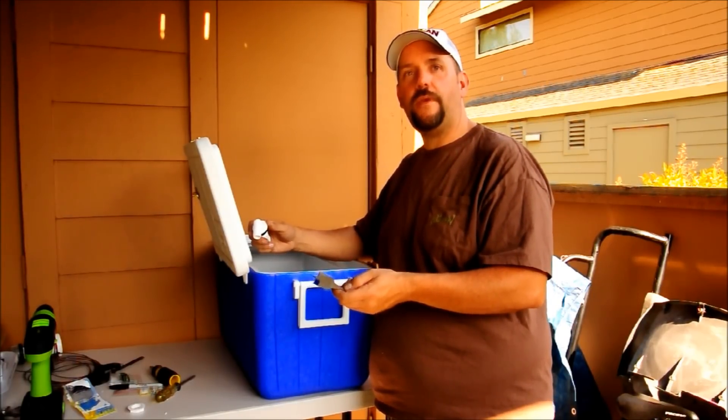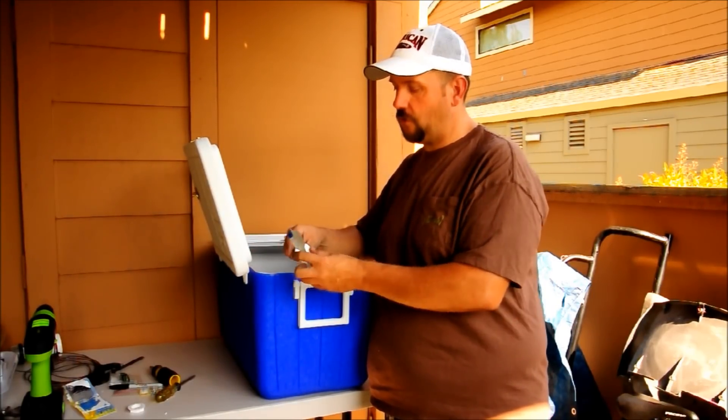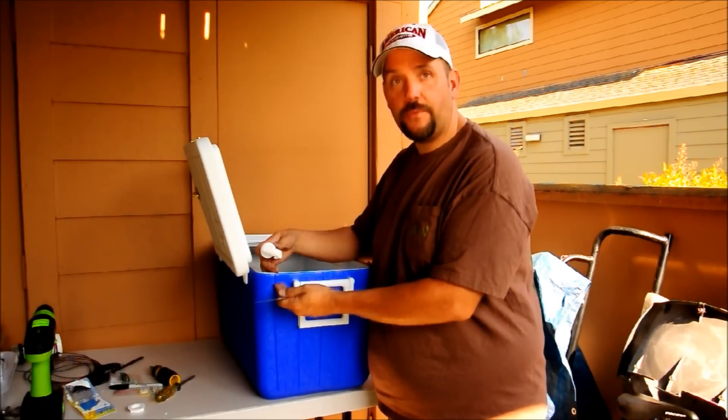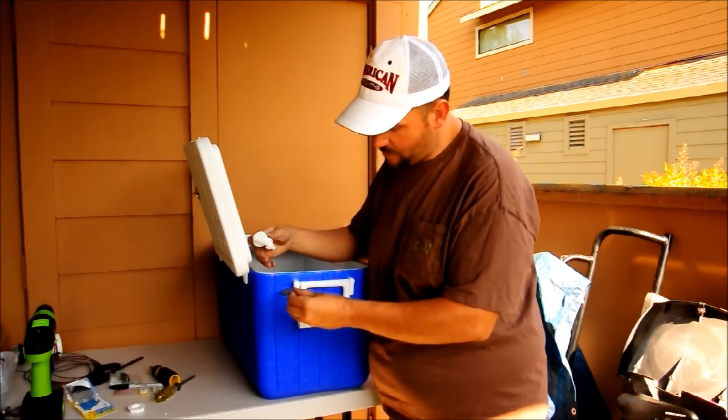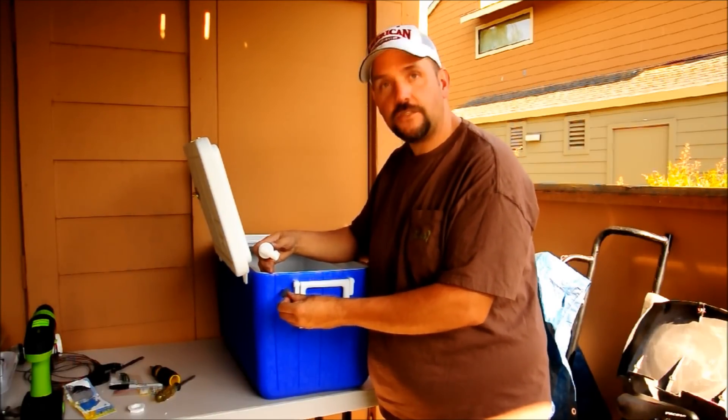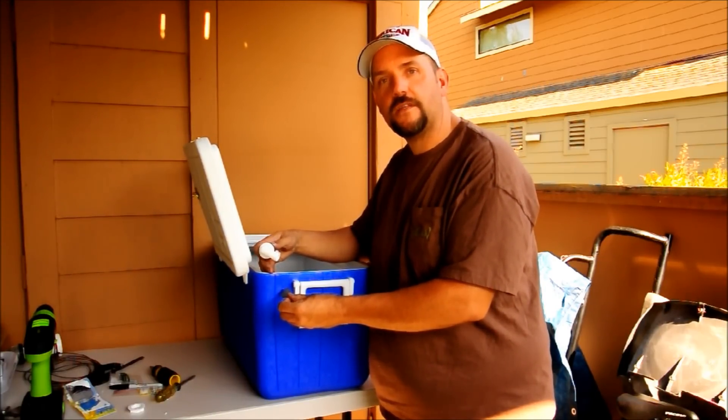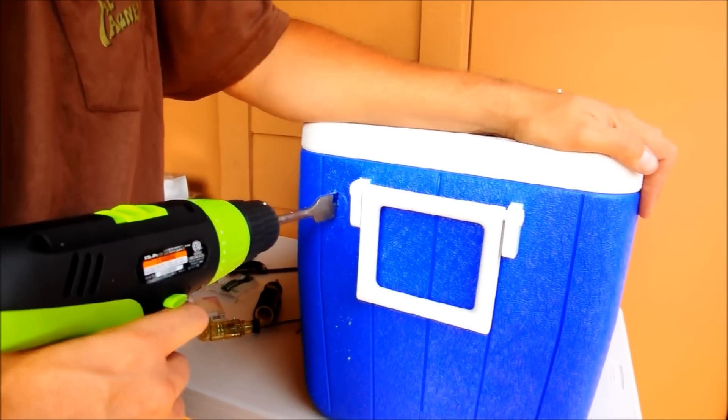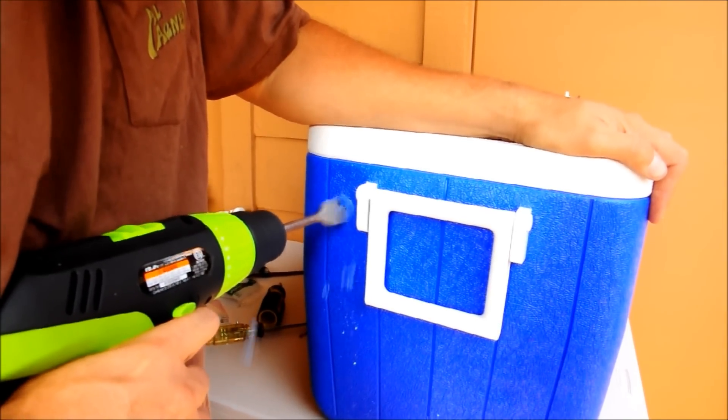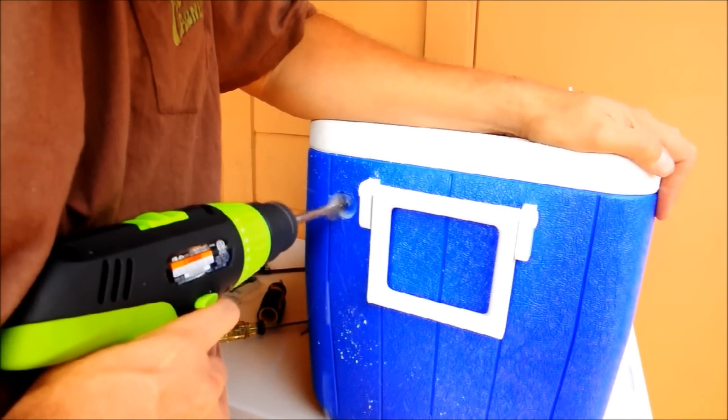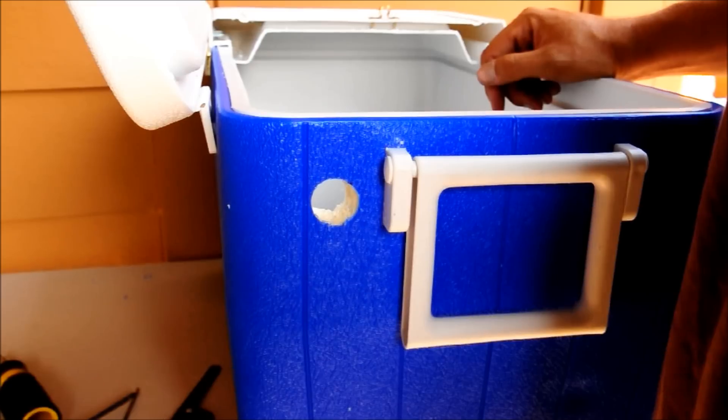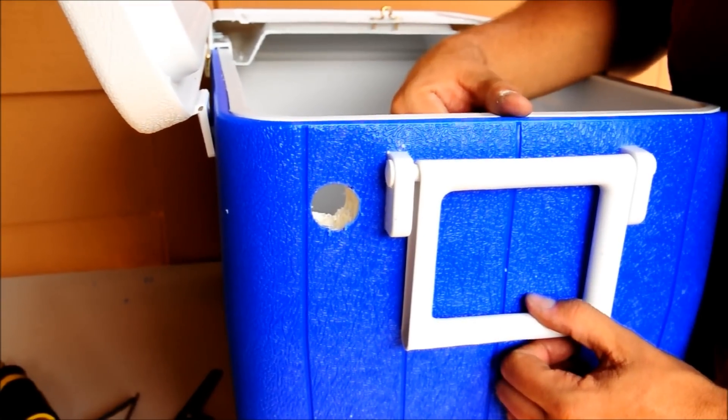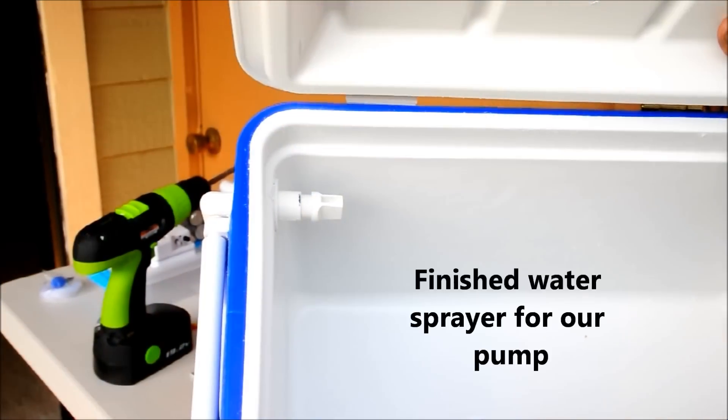Now it's time to put the pump in. We start by drilling a one-inch hole, same size as the hole for the sprayer, near the top and the back, right about there. We'll get started with that and show you the finished product in a second. Alright, now we finish off the hole for our pump. Okay, now we've drilled our one-inch hole, and next we'll put in our sprayer.